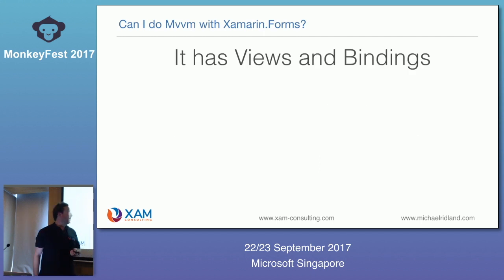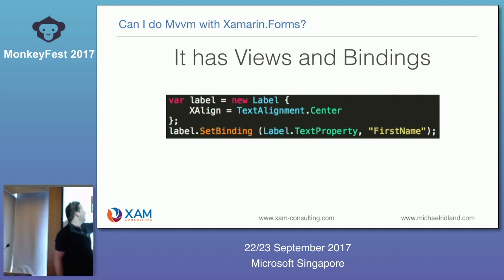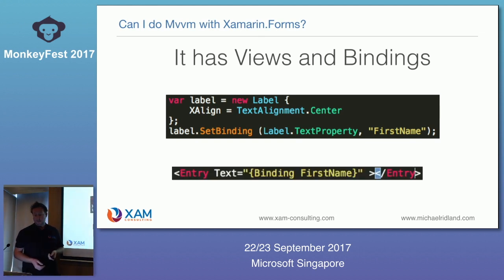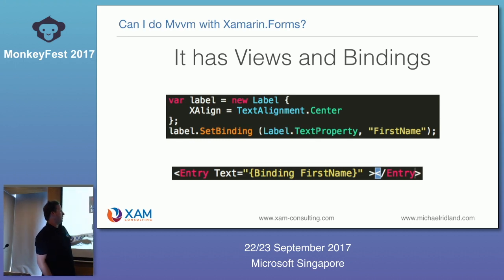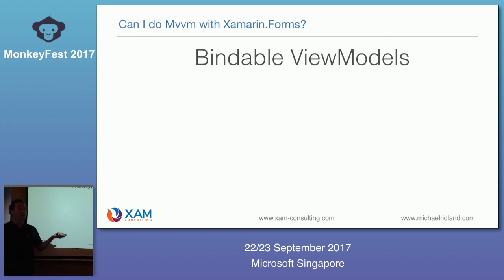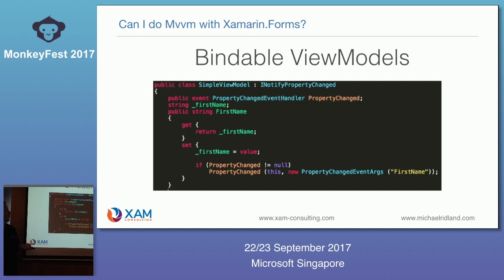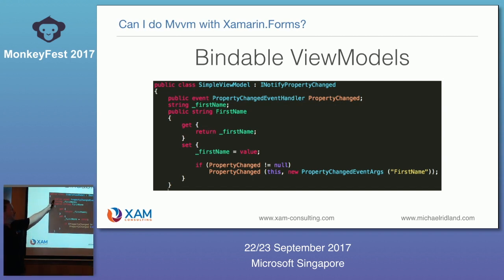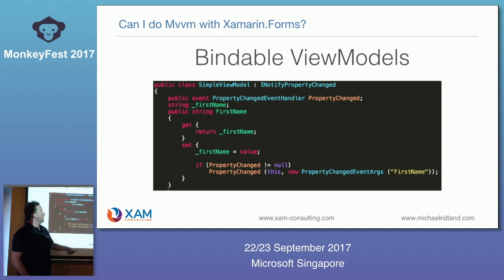In Xamarin Forms you've got your view — here's a Xamarin Forms label aligned to center — and I'm doing a binding, binding the label's text property to FirstName. So whenever FirstName updates in the view model, that updates on the label. You can also do that in XAML with an Entry element, binding Text to FirstName on the view model. For a bindable view model in C#, all you need is to implement INotifyPropertyChanged — you implement the interface, have the PropertyChanged event handler, and whenever the property changes you raise that event. That's how the view knows something's changed in the view model.